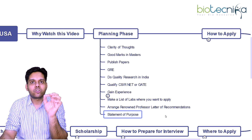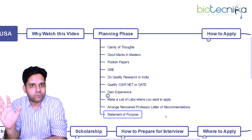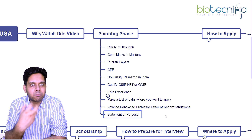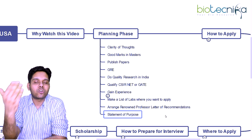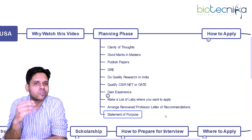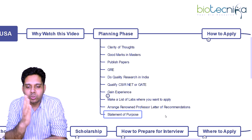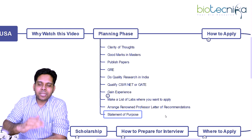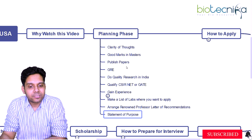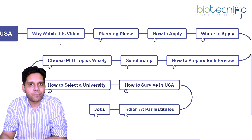Arrange letters of recommendation from renowned professors as well as from your employer. Next is the statement of purpose. Whenever you're applying, you need a very strong statement of purpose — don't just write what you have done. Show what you can contribute, what experience you have, and how it will help your future research in that particular university and domain. This is the planning phase, and without planning you should not jump in, because you're going there for five, seven, ten years or maybe forever.